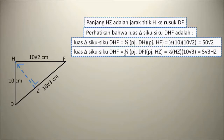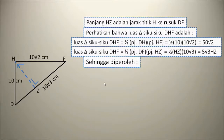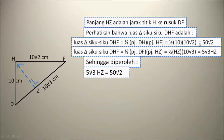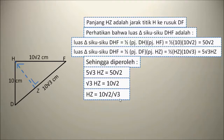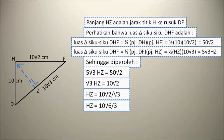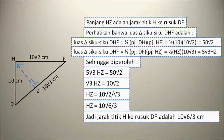Luas segitiga siku-siku DHF sama dengan setengah kali panjang DF kali panjang HZ, sama dengan setengah kali HZ kali 10 akar 3, sama dengan 5 akar 3 HZ. Sehingga diperoleh 5 akar 3 HZ sama dengan 50 akar 2, atau disederhanakan: akar 3 HZ sama dengan 10 akar 2. Sehingga HZ sama dengan 10 akar 2 dibagi akar 3, atau kita rasionalkan penyebutnya menjadi 10 akar 6 per 3. Jadi jarak titik H ke rusuk DF adalah 10 akar 6 per 3 cm.